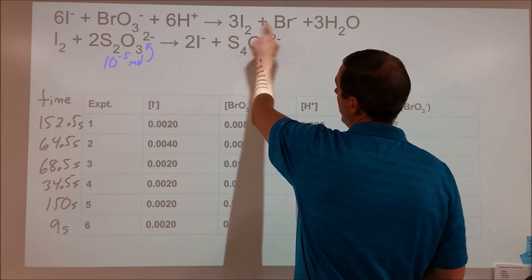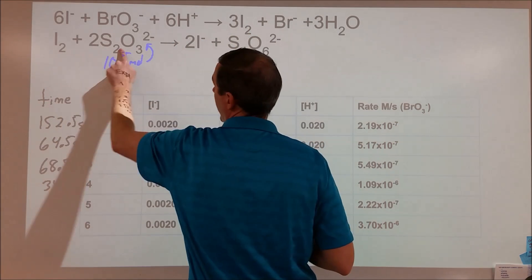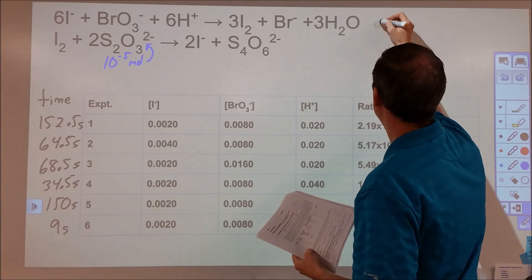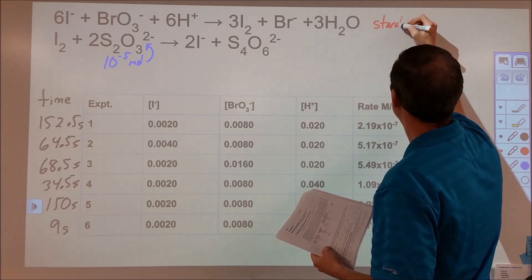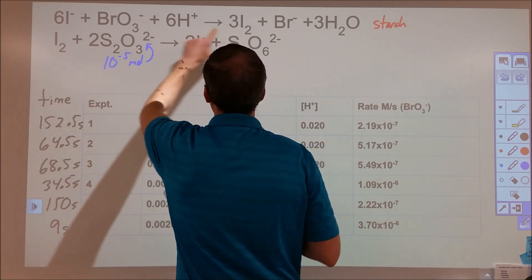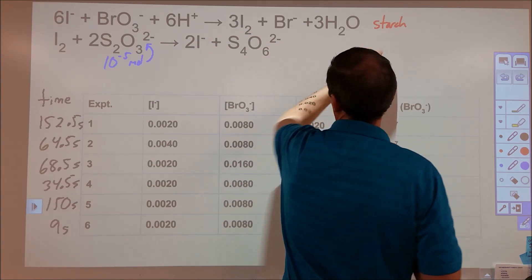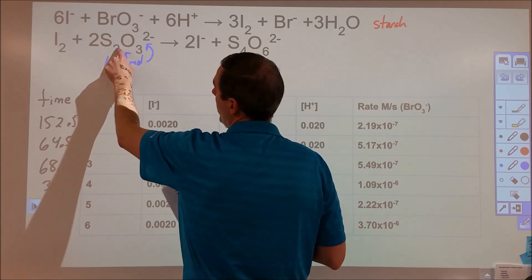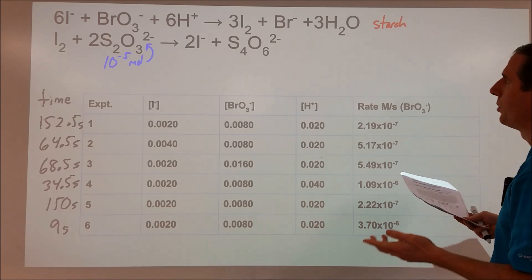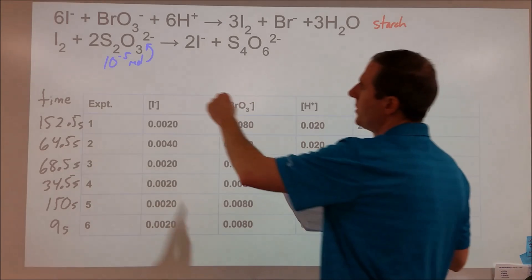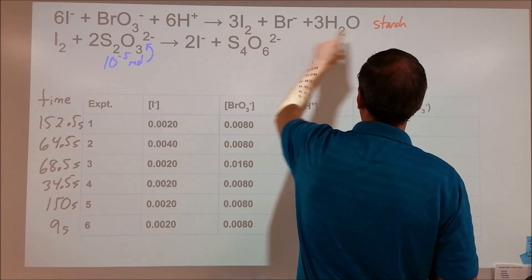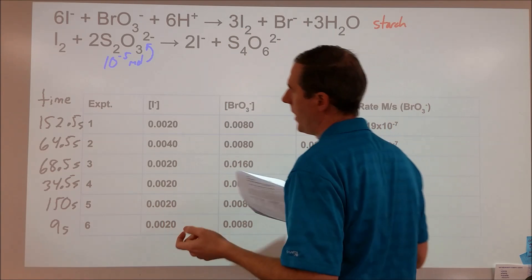And then as soon as these products get produced, this one reacts with this. And so there's a starch indicator there that's colorless. And as soon as the iodine is present, it should react with the starch to turn blue. But this reacts with it first, turning it into iodide, which does not cause the blue color. So what will happen is, as soon as this runs out, we'll stop reacting with the iodine. And at that point, you'll get the starch to react.